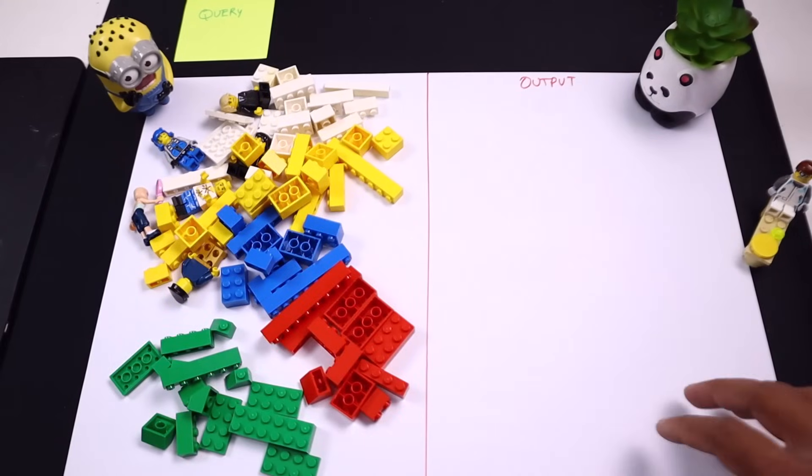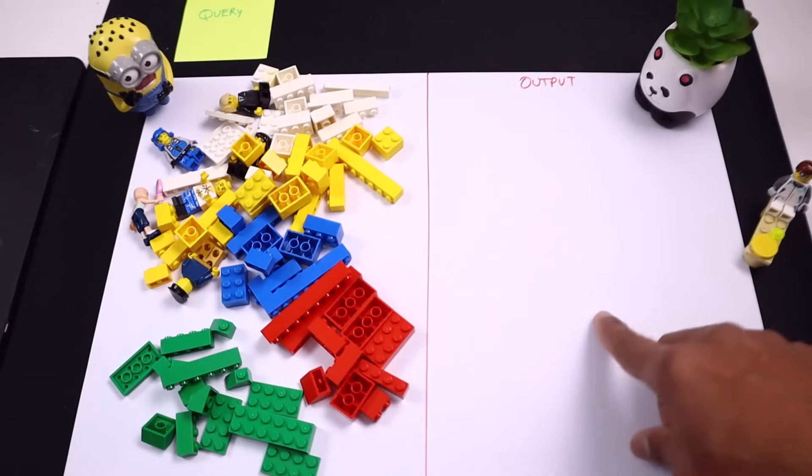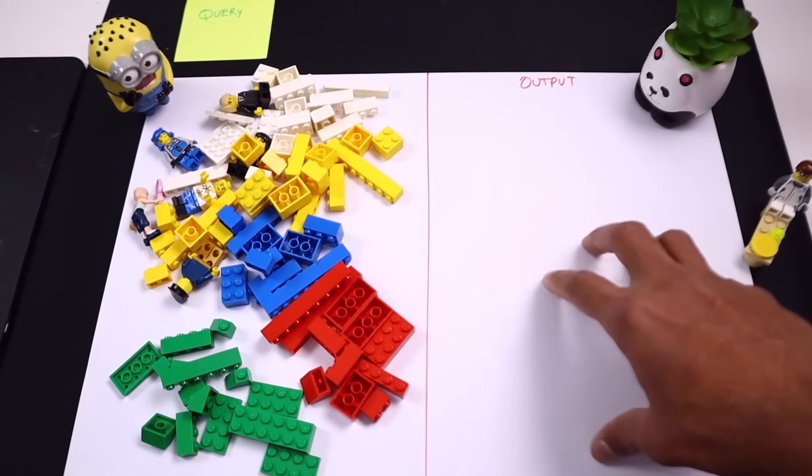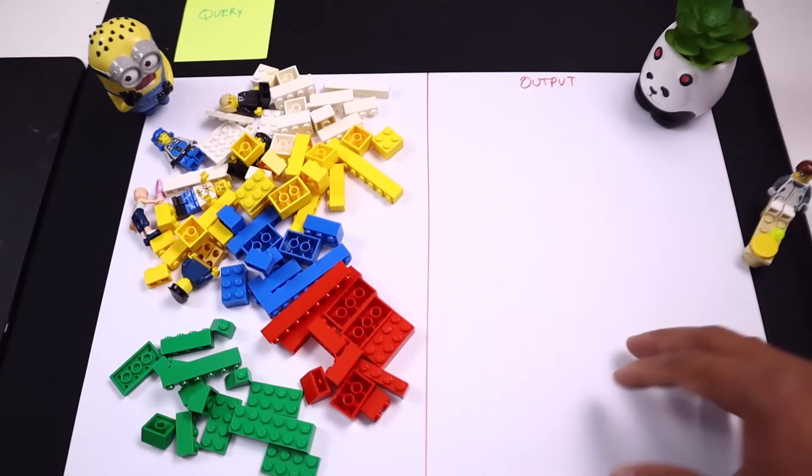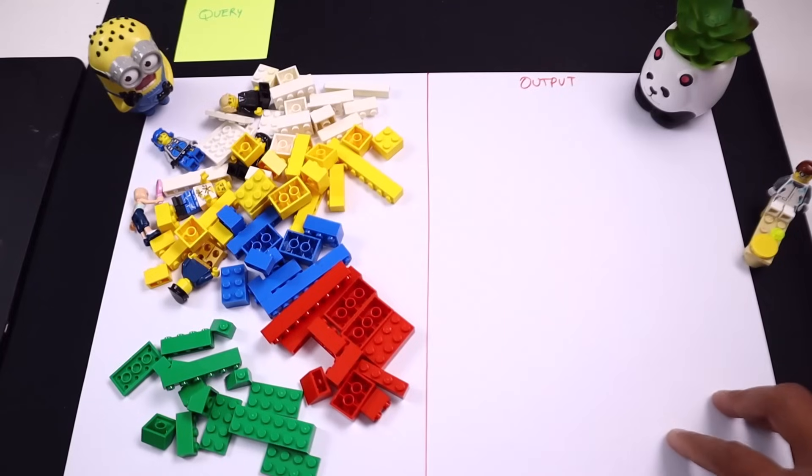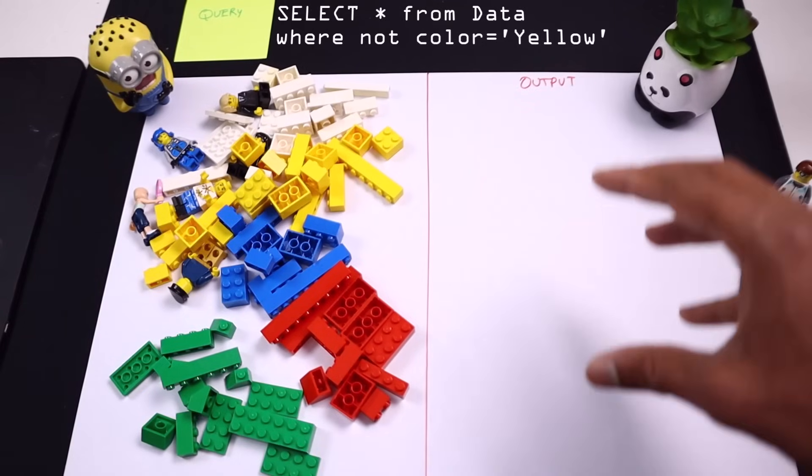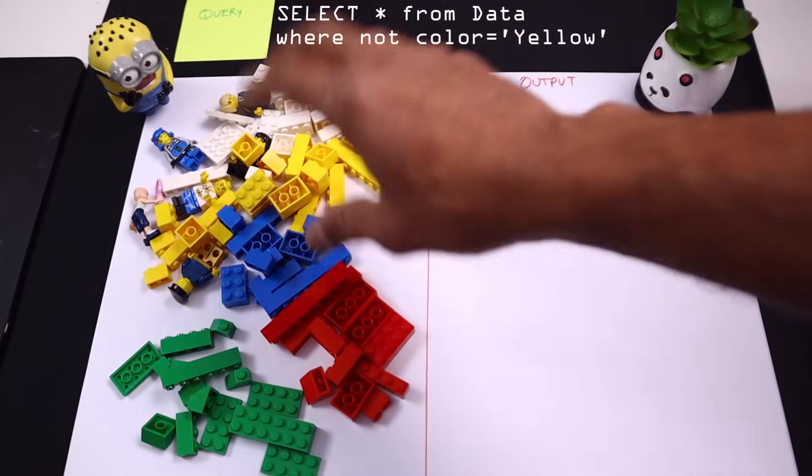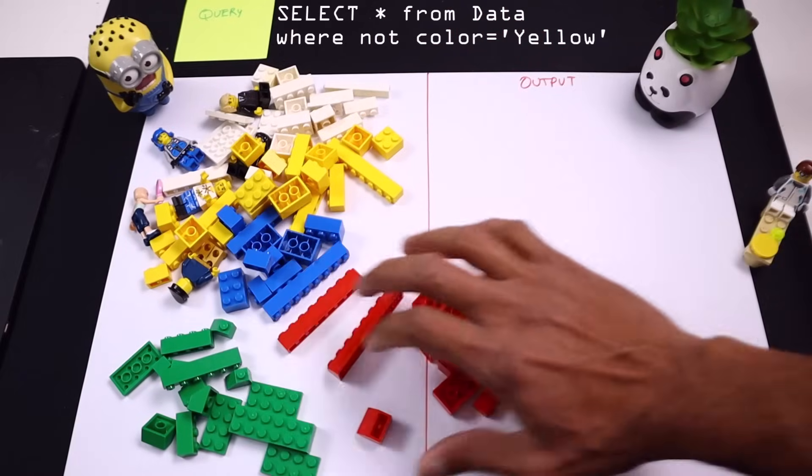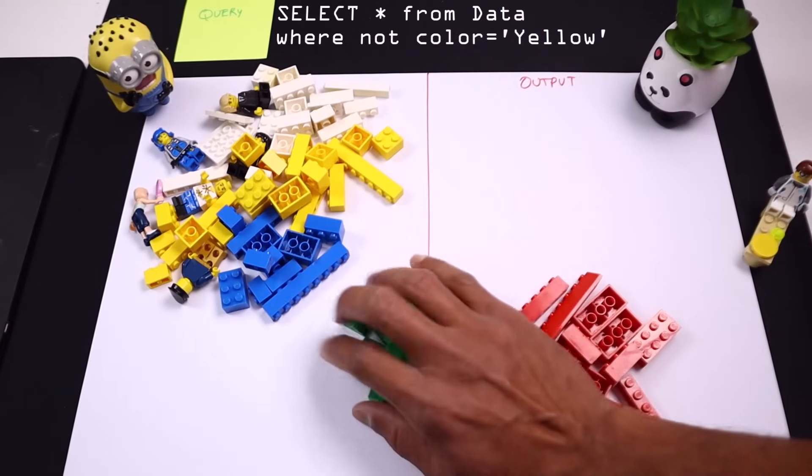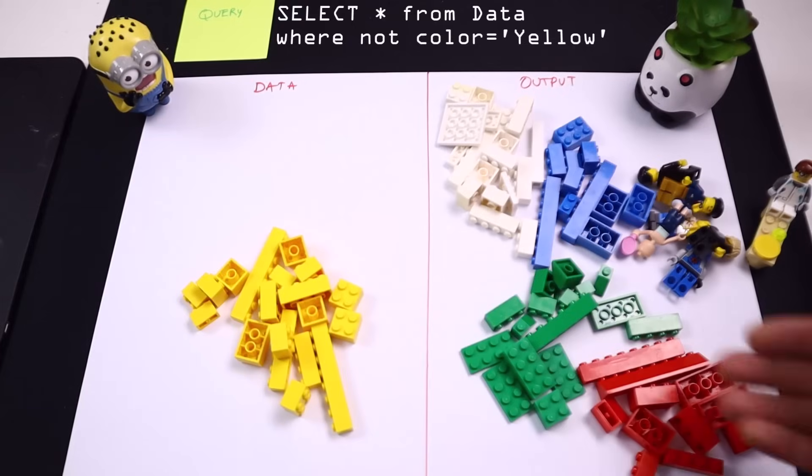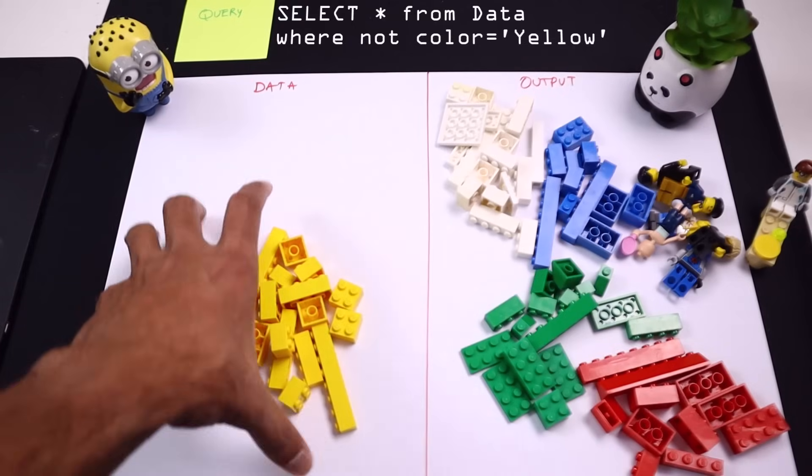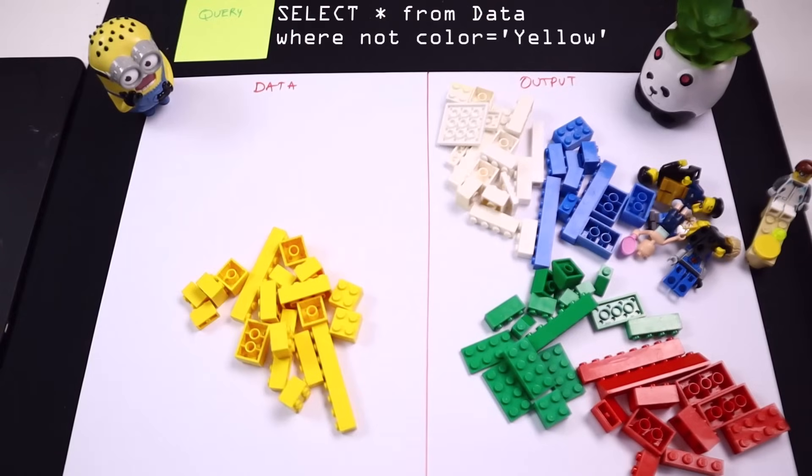Many times when you are developing SQL queries, you may want to have data here that is not meeting some conditions. So a NOT operator is also available in SQL wherein we could say select star from data where color is NOT yellow. So what that will do is it will give you all the other bricks except the yellow bricks.